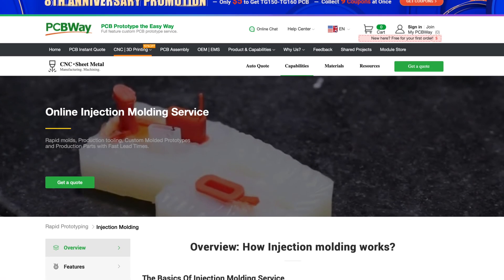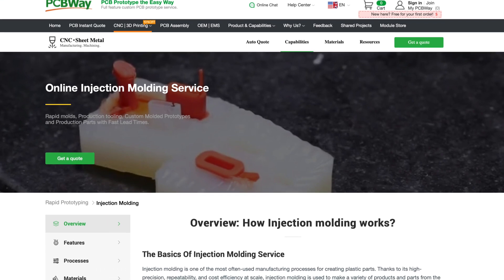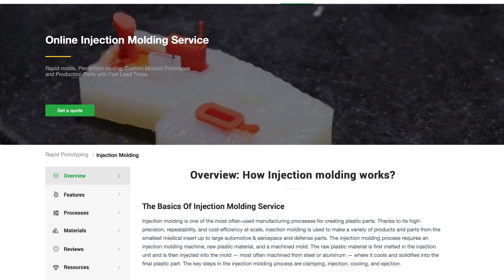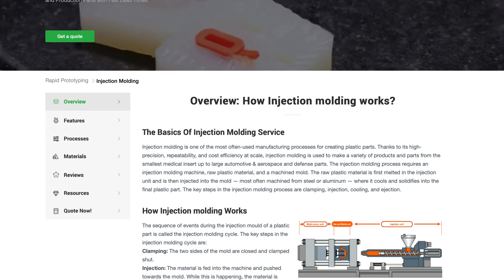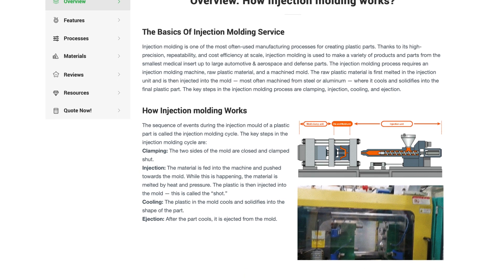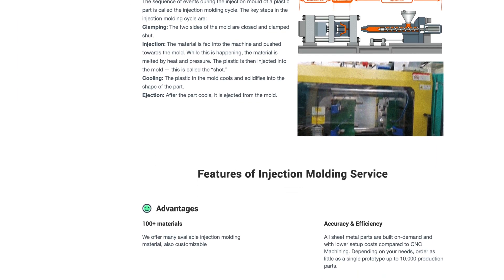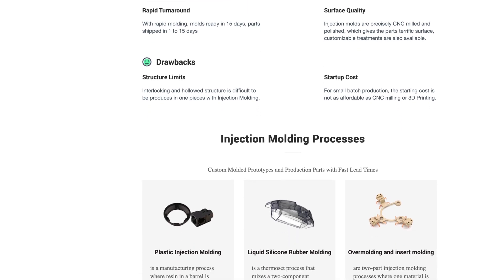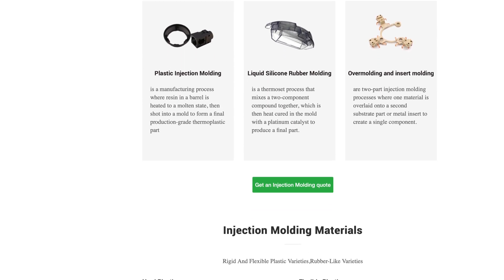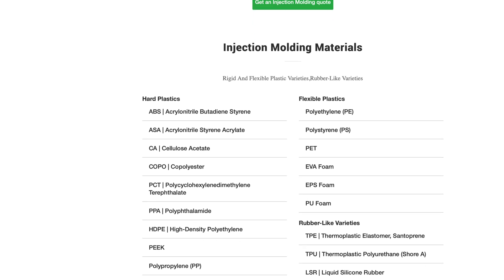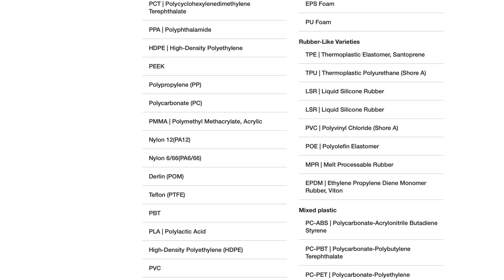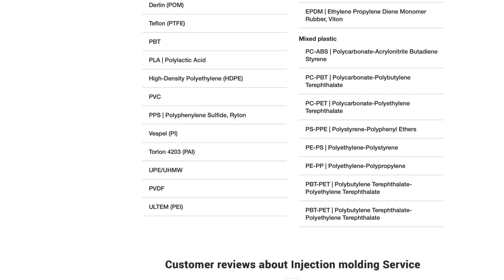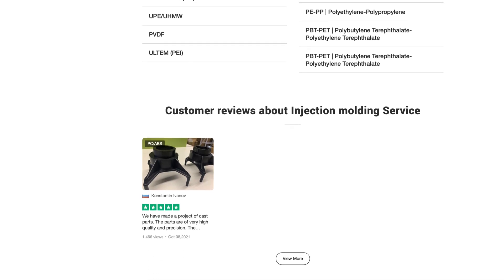This episode's sponsor PCBway offers injection molding services including plastic molding, liquid silicone rubber, as well as insert and overmolding. They offer a wide range of plastic materials and SPI mold surface finishes. Check them out for your next project, link in the description below.